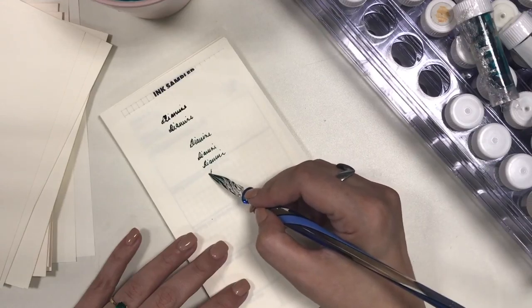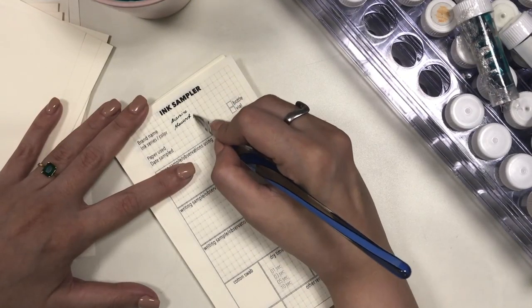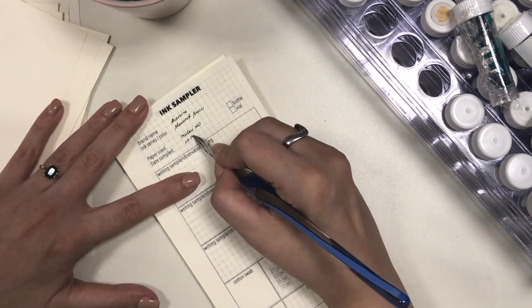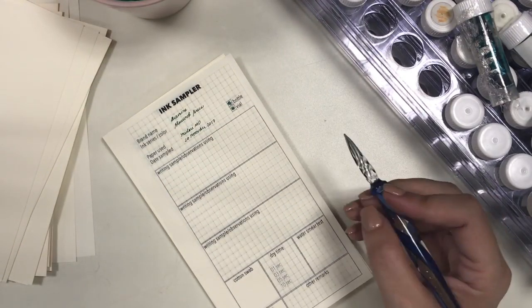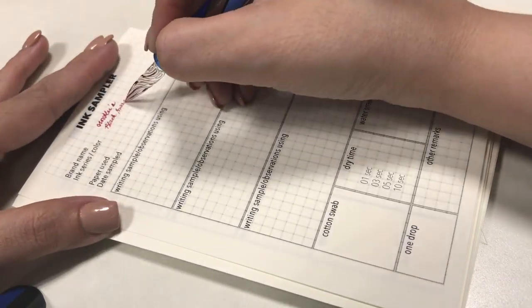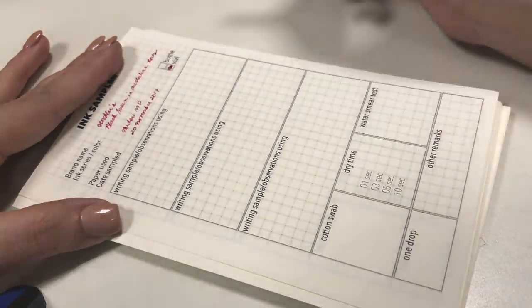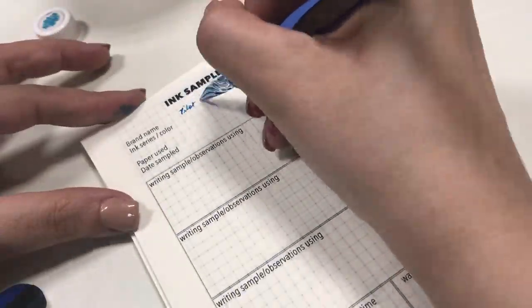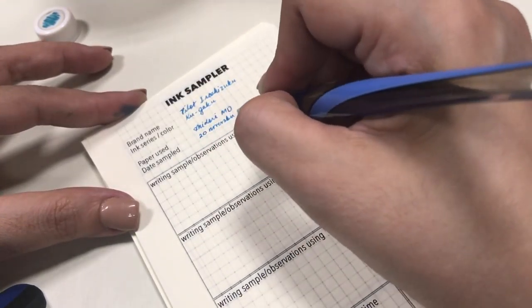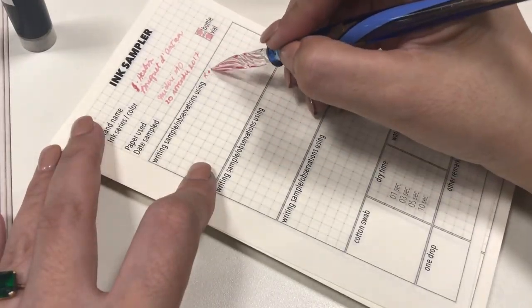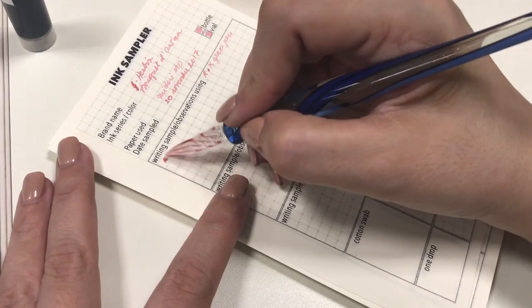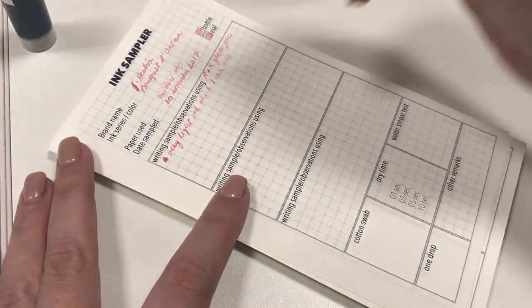So using the glass pen I filled in some information on the pages like the brand, the series or color, the paper used which is of course the Midori MD paper, the date when I made the swatch which is December last year, and then shaded in the box that pertains to either a bottle or a vial or both. And then I wrote my observations about the ink on the first box using the glass pen.